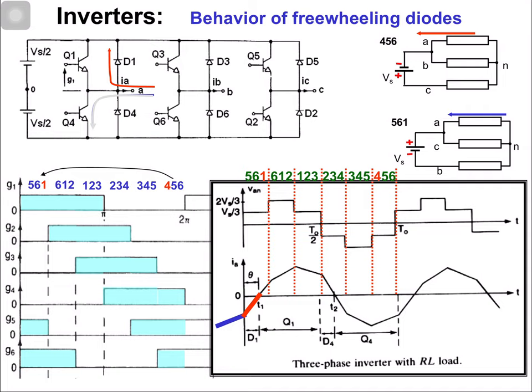After diode D1 turns off, Q1 starts conducting. The current through Q1 is now positive. In this part of the cycle, the voltage is positive but the current is negative, so what is the power? Power is negative.